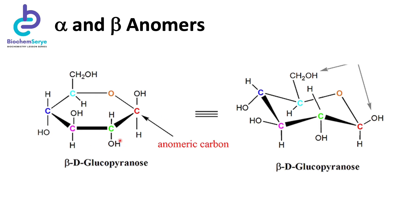Moving from the Haworth projection to the chair conformation, the groups pointing upwards in the Haworth projection will now become equatorial or horizontal. For example, the anomeric OH group oriented upwards in the Haworth projection is now described as equatorial in the chair conformation. Consequently, groups pointing downwards — for example, the OH group attached to carbon 2 — will now become axial or perpendicular to the horizon.